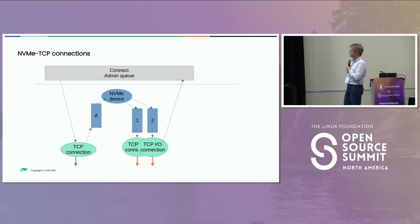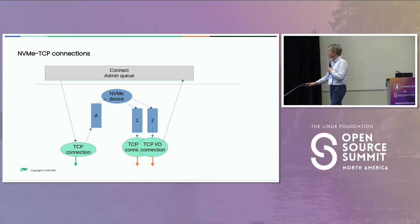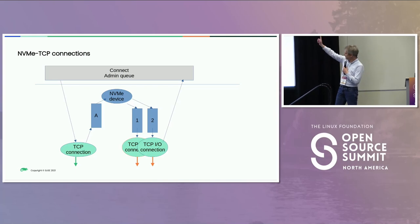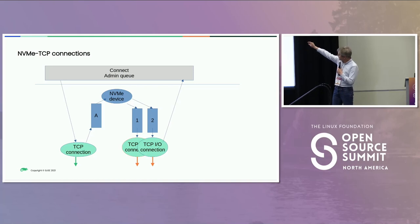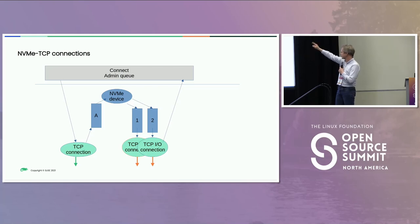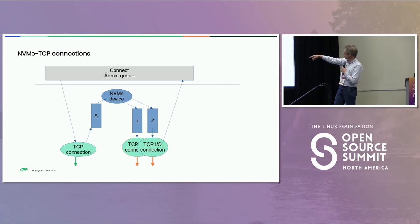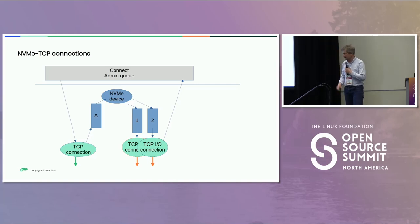Here's a schematic of how the whole thing works: you send the command, create the TCP connection queue, establish the admin queue, create the NVMe device, send the connect command, determine how many queues to create, open connections for each queue in turn, and once you're done with all of that, you return to user land and say 'I'm done.'